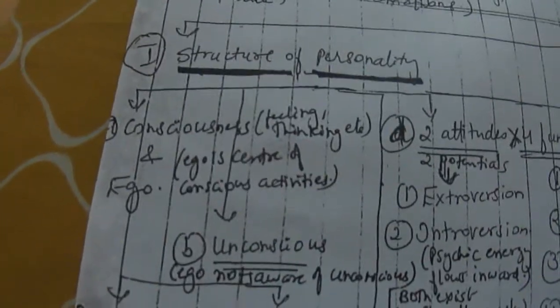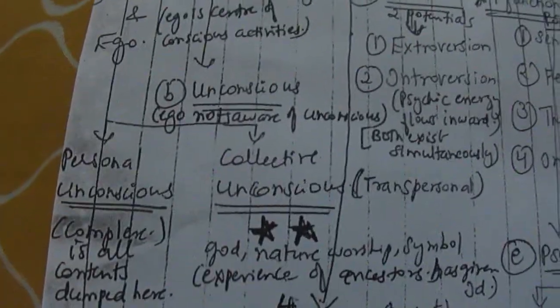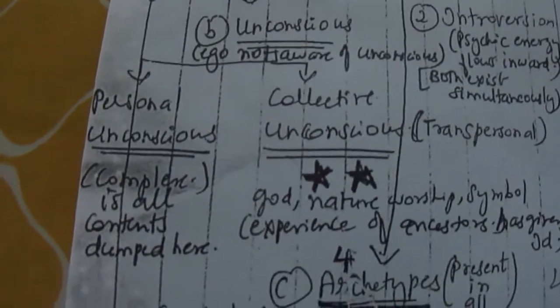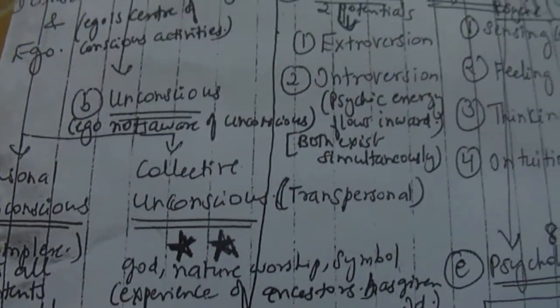First is the structure of personality. Under that we did consciousness and ego. Then we did unconscious, under that we did the persona unconscious and the collective unconscious.